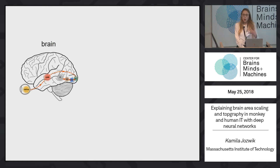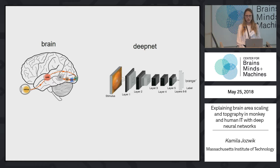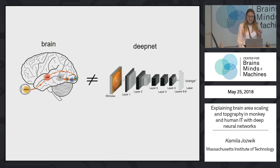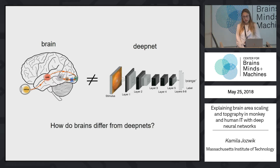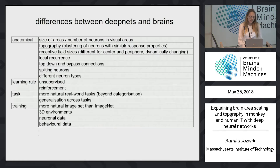We are all interested in understanding the brain, and some of us are building models of the brain. Deep nets have been shown to be promising models, and they explain a lot of variance in brain representations. However, they don't really explain the full variance, and there are differences between the brain and the deep net. Would introducing brain-inspired constraints help bridge the gap? This is a list of differences between deep nets and brains.